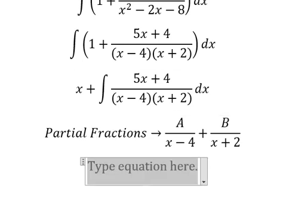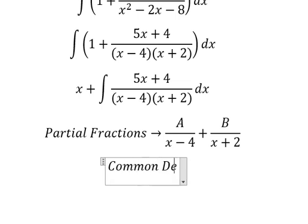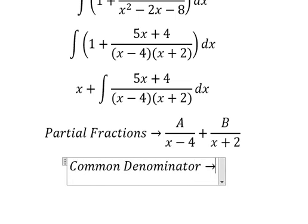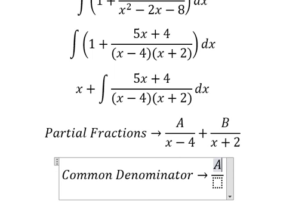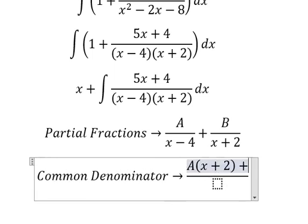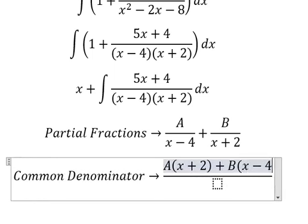Now we do the common denominator. A multiplied by x plus 2, B multiplied by x minus 4.